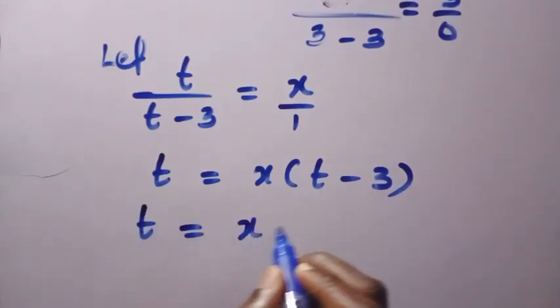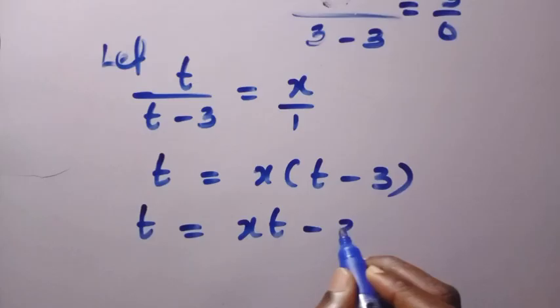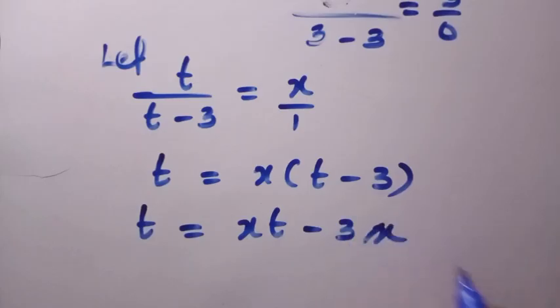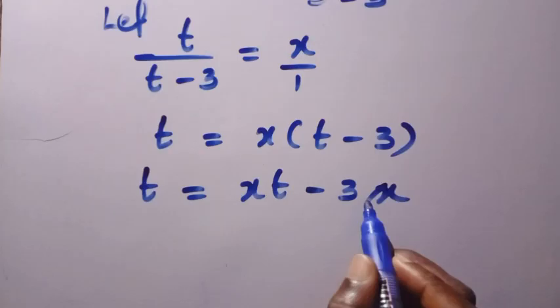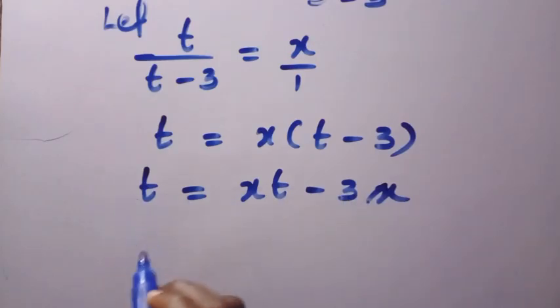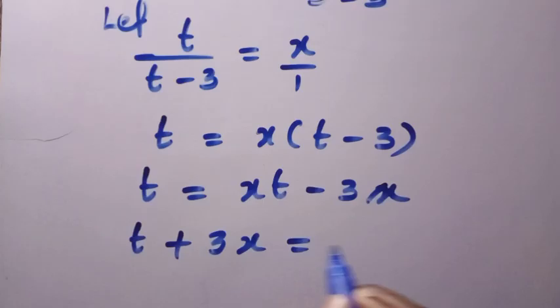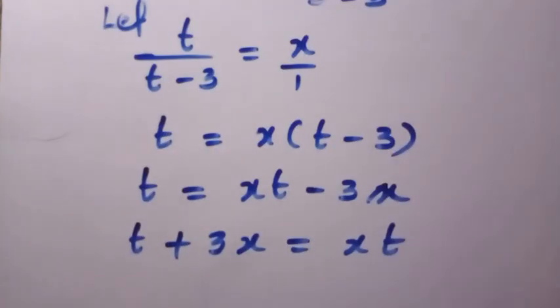t equals x times t minus 3x. Then we are going to take this minus 3x to this side. We have t plus 3x equals xt.